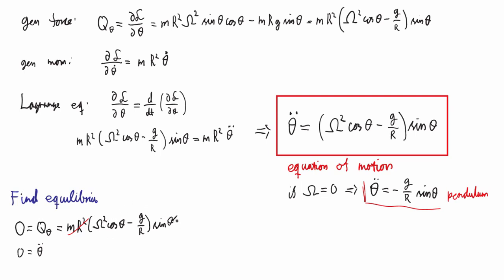This now corresponds to two factors: we have the sine(theta) factor, and then we have the factor within parentheses. Looking at the sine(theta) factor first, if it equals zero, that corresponds to either theta being zero or theta being pi.